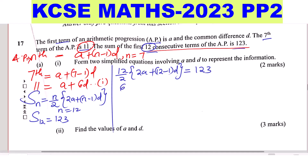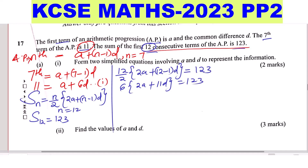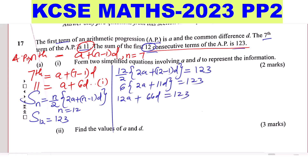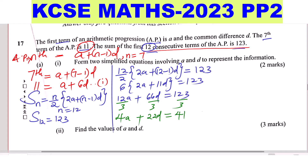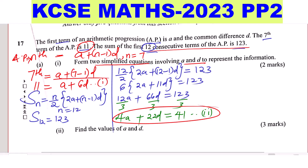Simplifying: 6 multiplied by (2A plus 11D) equals 123. Opening the brackets gives 12A plus 66D equals 123. Dividing everything by 3 gives 4A plus 22D equals 41. So that is equation 2. We now have two simplified equations in terms of A and D.